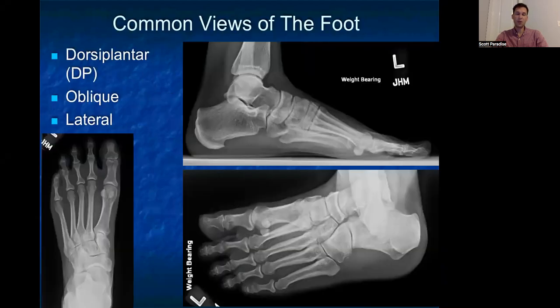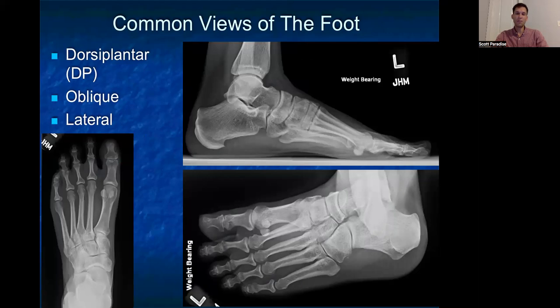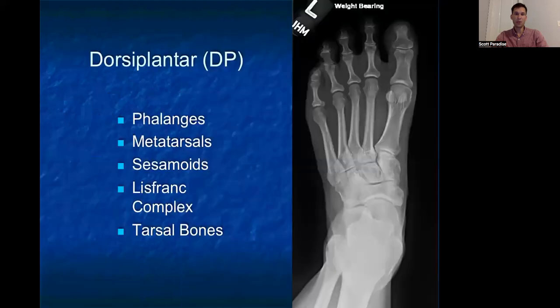We'll start with three views of the foot that are common. First is the dorsiplantar in the bottom left — this is our AP correlate. Then we're going to look at our oblique view on the bottom right and our lateral view on the top right. Just a note about these x-rays: we're always going to try and get weight-bearing x-rays if possible. These help identify the foot in its functional state and can help give a sense of inclination as well as certain injury patterns.